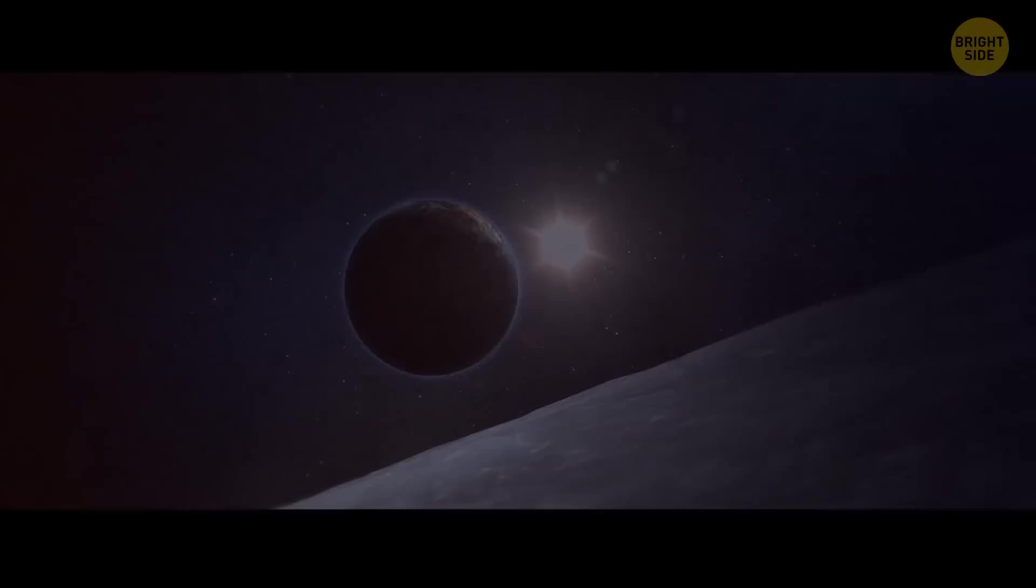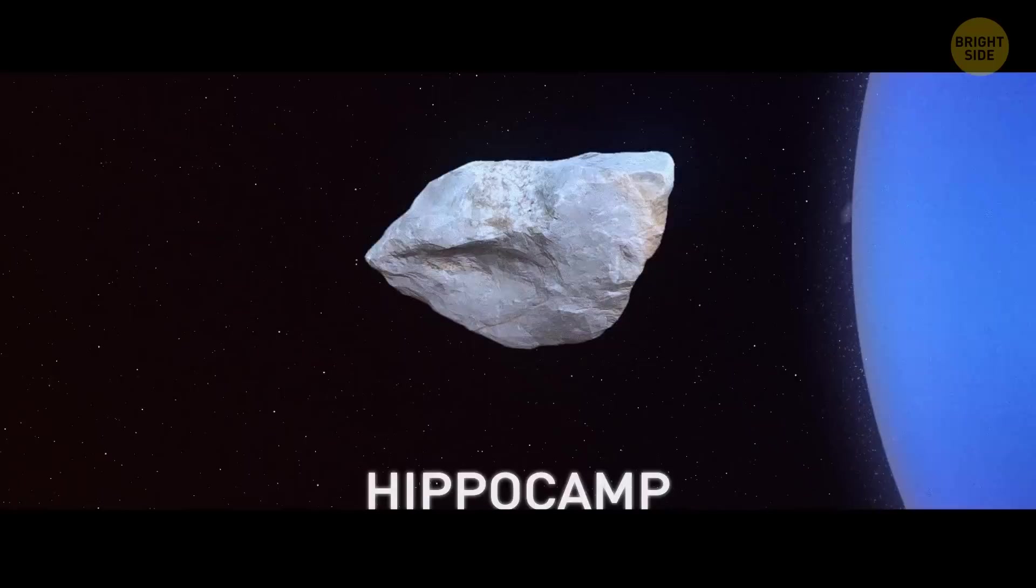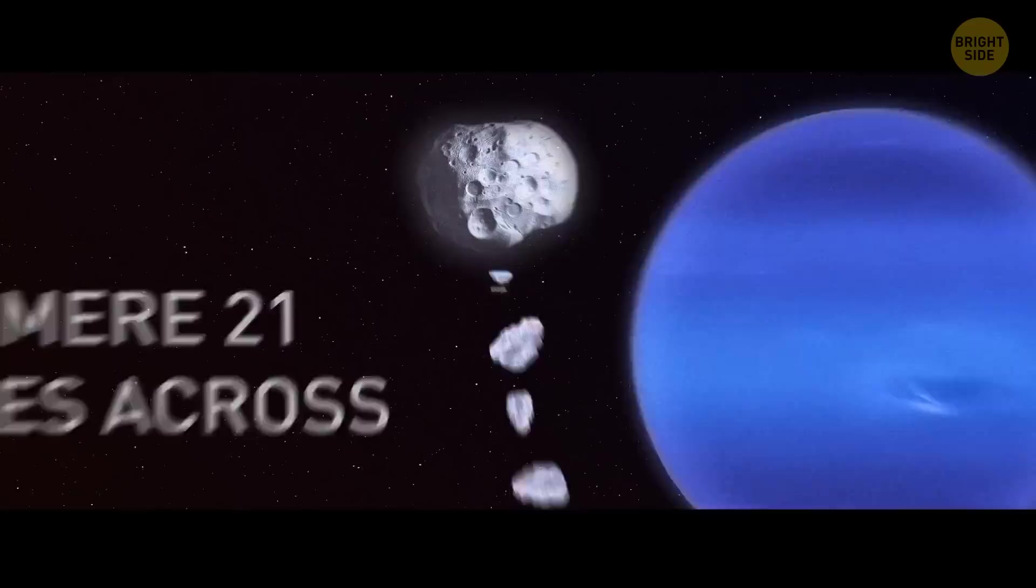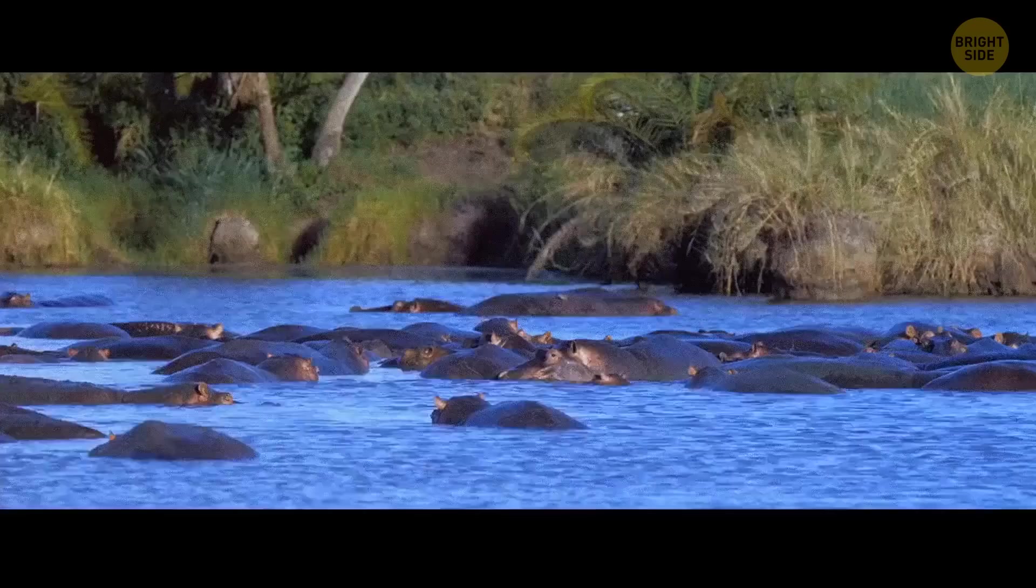Now, the Moon isn't the only space body in the solar system with a mysterious past. Hippocamp is Neptune's Moon, discovered in 2013. It's the smallest moon of this ice giant, a mere 21 miles across. It's very close to Proteus, the biggest of Neptune's inner moons. And no, Hippocamp is not a place for big African mammals to spend the summer.